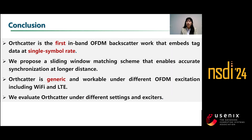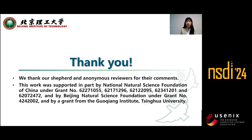To summarize, we have designed O-Scatter to achieve reliable and high-throughput communication while saving spectrum resources. The key innovation lies in the over-the-air co-division technique that passively constructs quasi-orthogonal cohorts in the backscatter signal from the original excitation signal. We also propose a sliding window matching scheme that enables accurate synchronization at longer distances. As thoroughly confirmed by our evaluation, O-Scatter is generic and works in different scenarios and with different exciters. Thank you for your time.